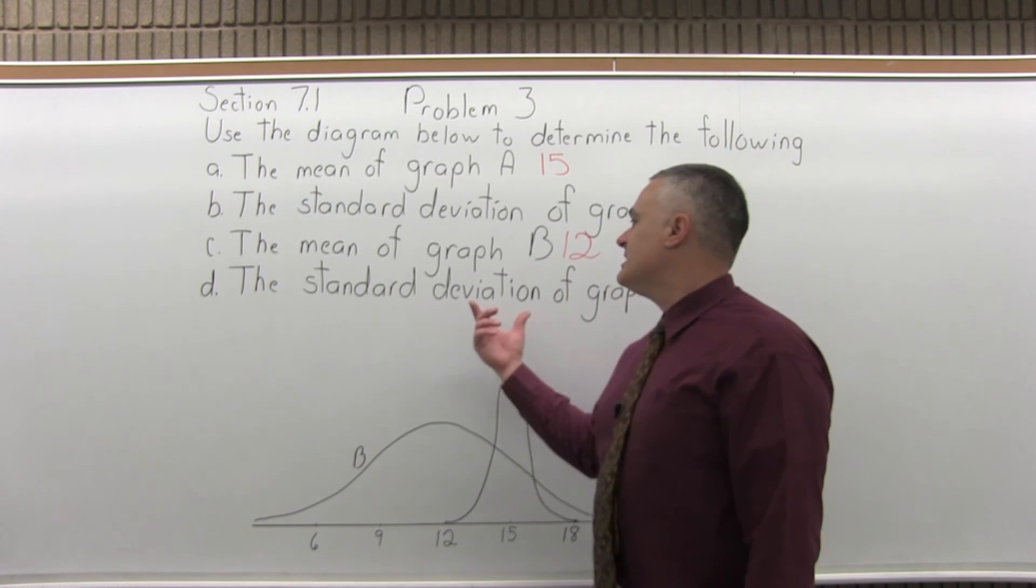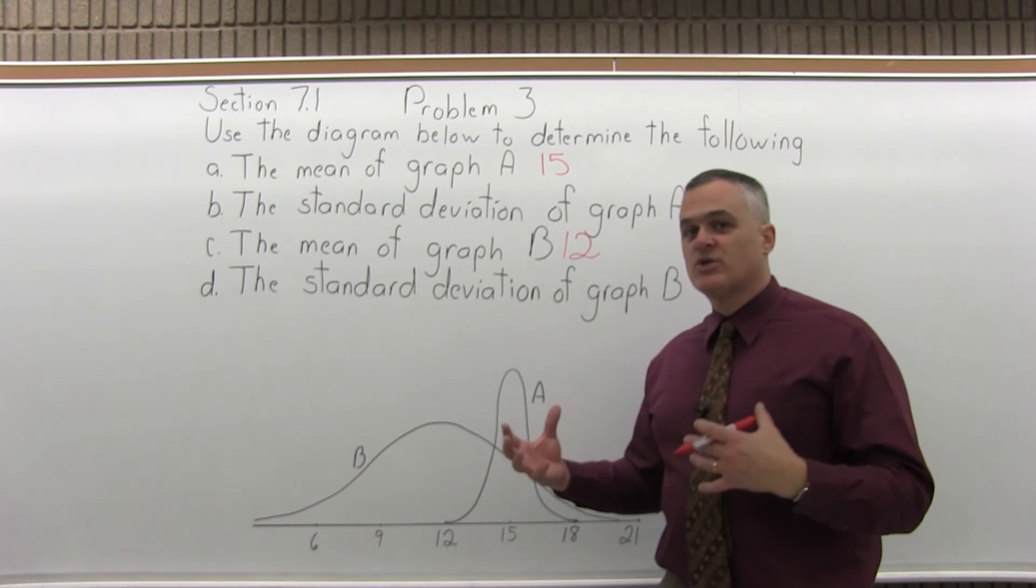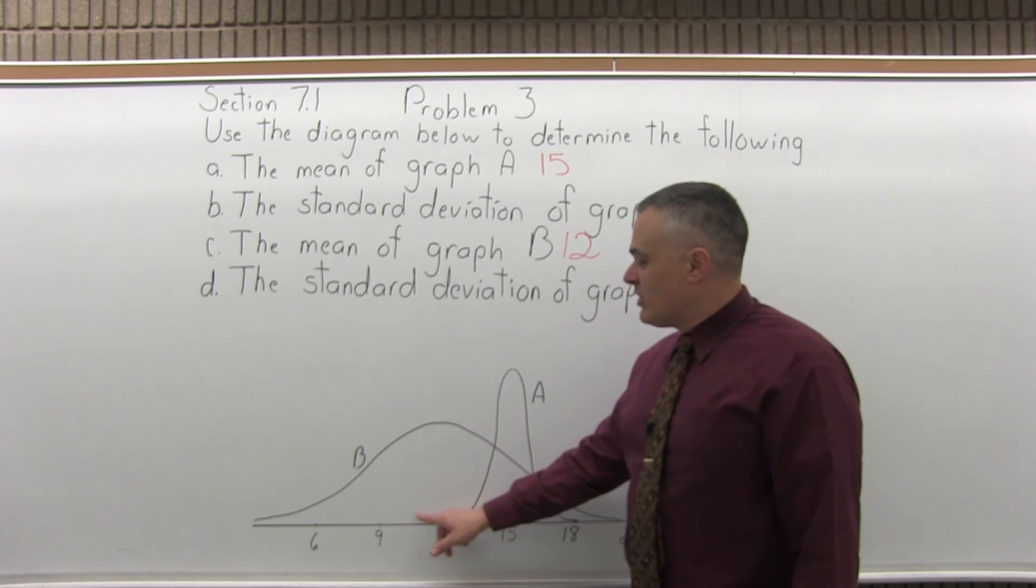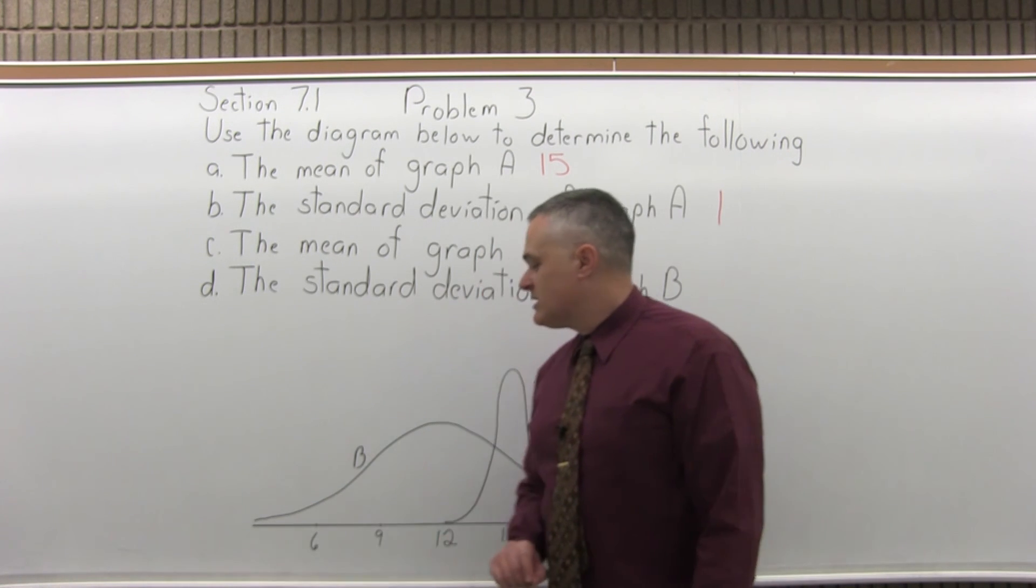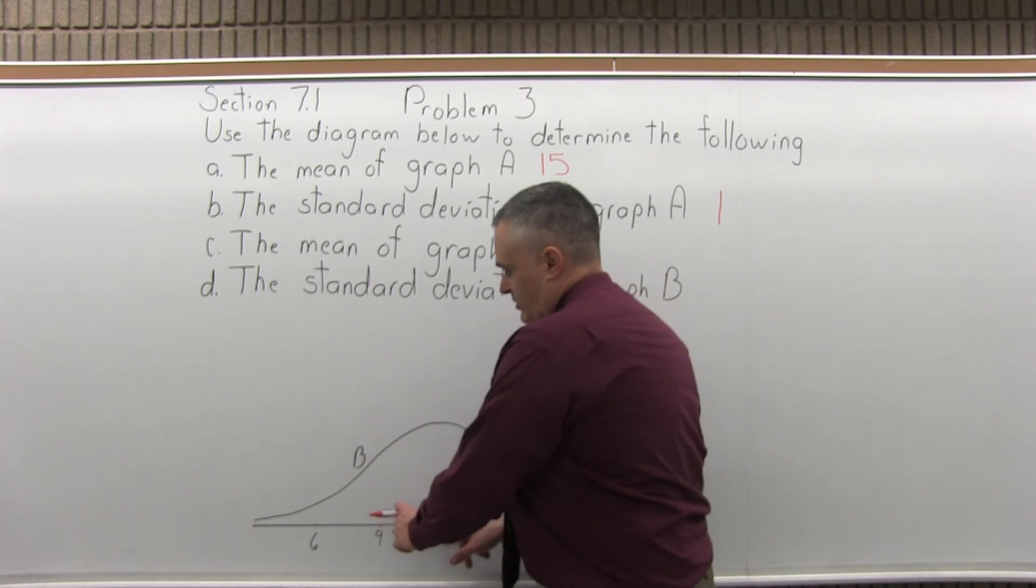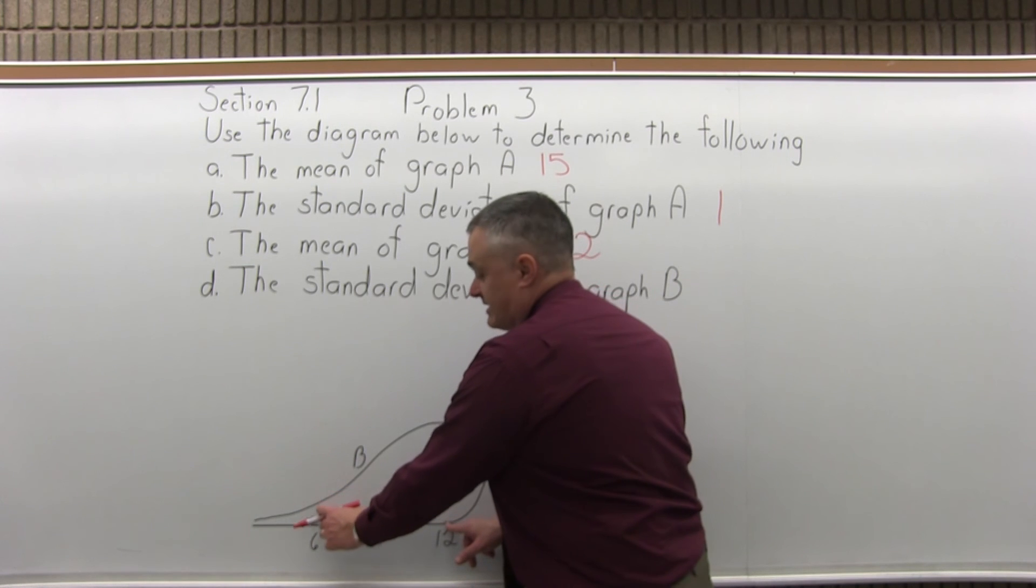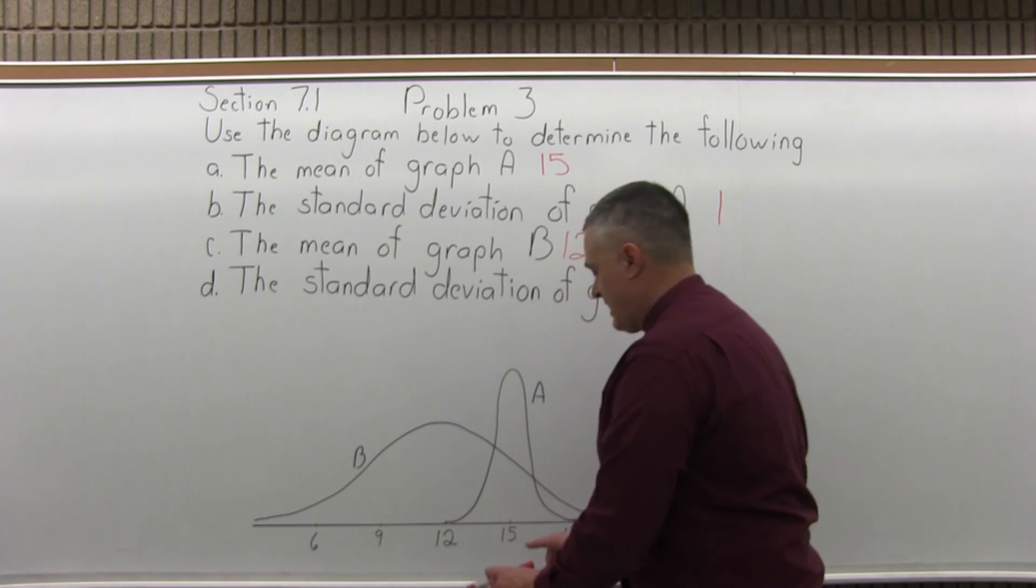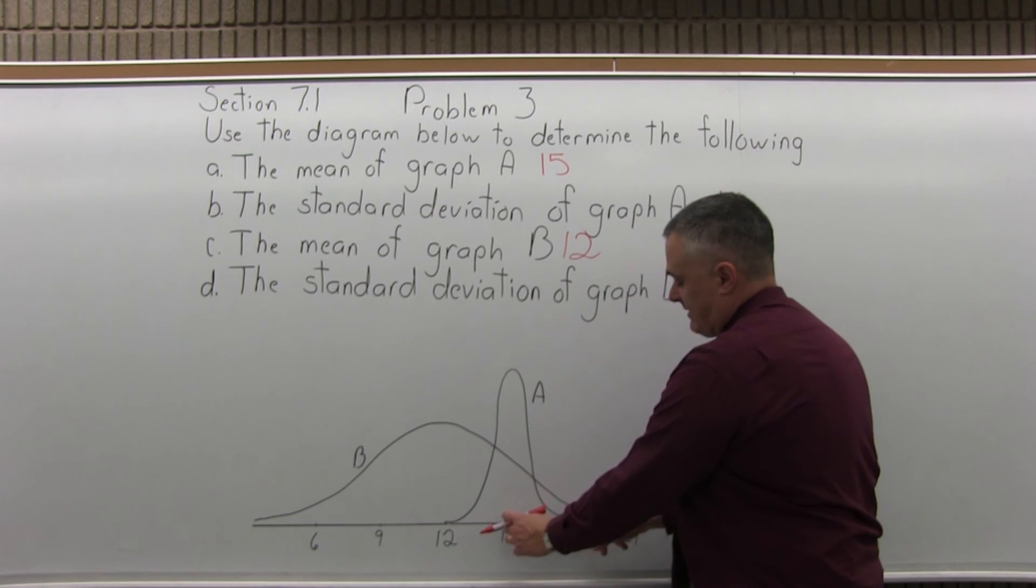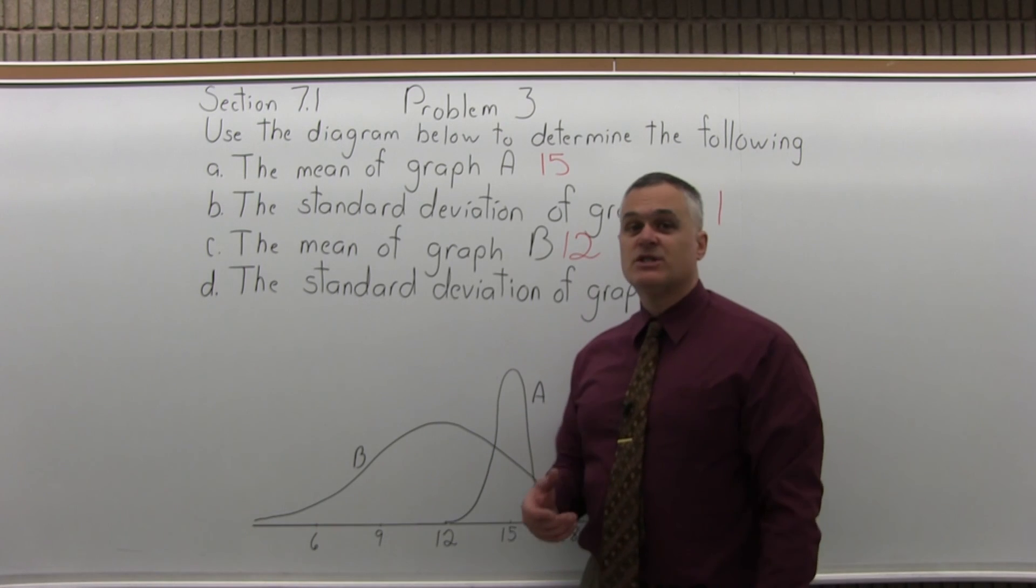And now the standard deviation of graph B. So again, that measure of how spread out the graph is. So if you're starting at 12, and you're going three standard deviations less than the mean, and three bigger than the mean, well, just the way the number scale works, one standard deviation less goes down to 9, then 6, then 3, and then three standard deviations bigger. The first one goes up to 15, then three more up to 18, three more.